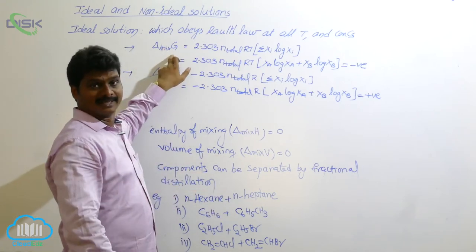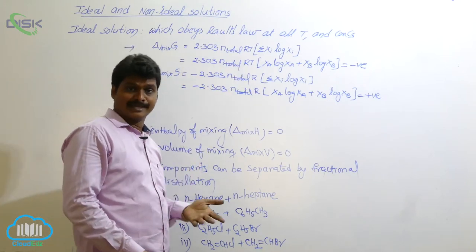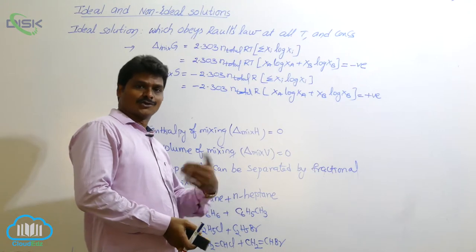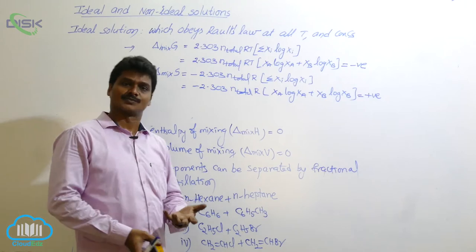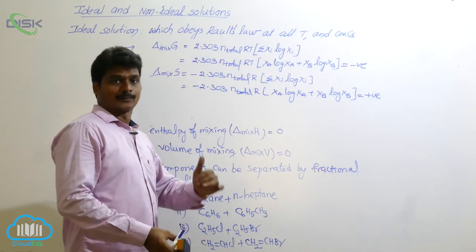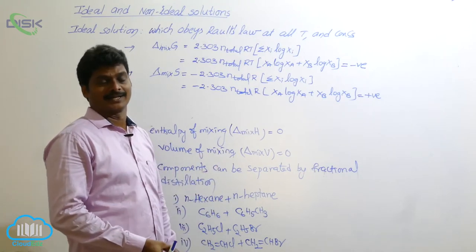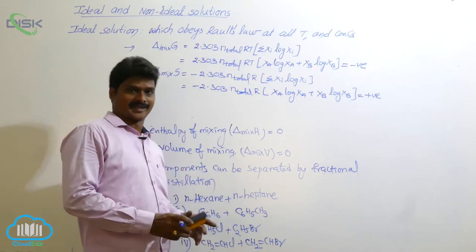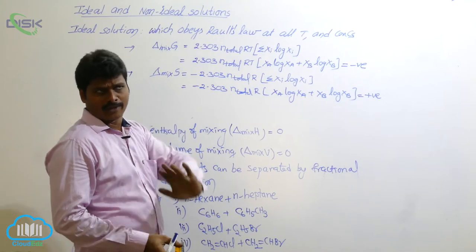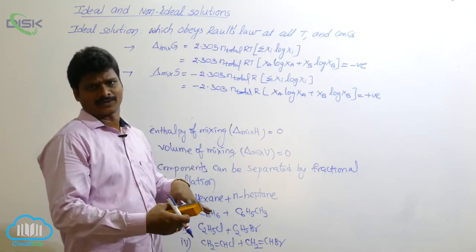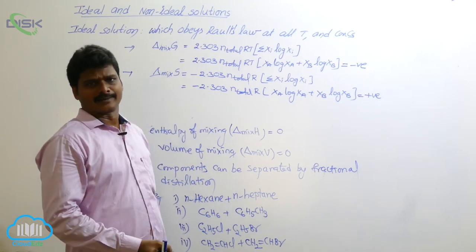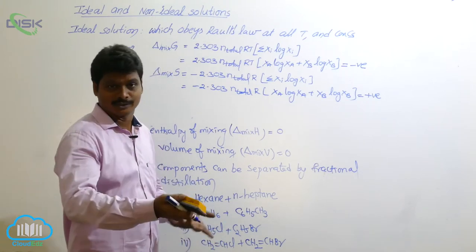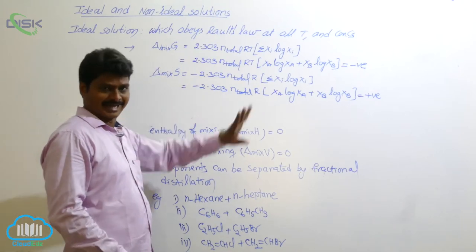Delta G negative means spontaneous process; delta G positive means non-spontaneous. A spontaneous process is one which occurs on its own — for example, water flows from a higher level to a lower level without any external energy. But water flowing from lower to higher level requires a motor — that is non-spontaneous. Similarly, gas flows from high pressure to low pressure spontaneously. For spontaneous processes, delta G is always negative.